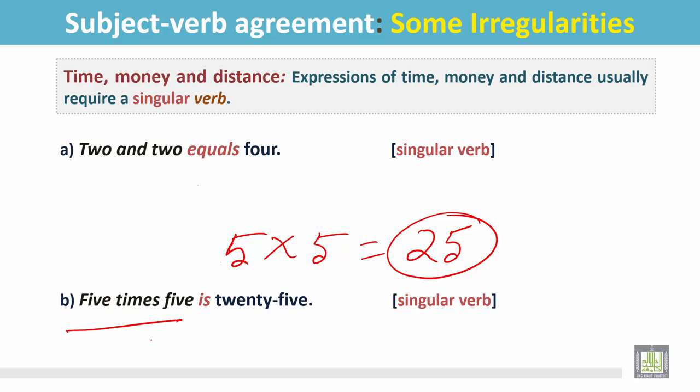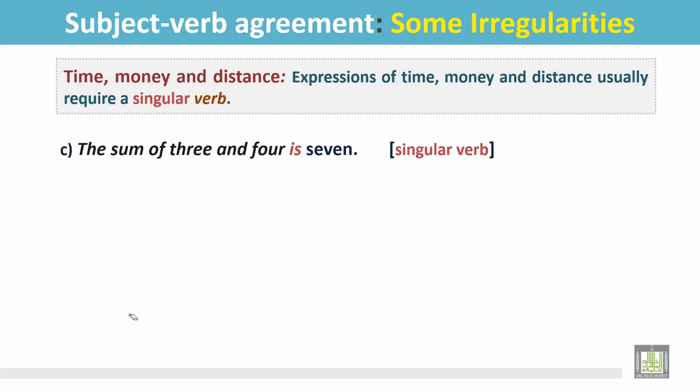The subject here is singular and the verb is singular too. Another example: the sum of 3 and 4 is 7.